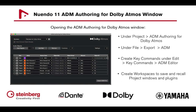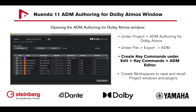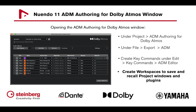Let's take a look at the ADM Authoring for Dolby Atmos window. It can be opened under Project > ADM Authoring for Dolby Atmos, or under File > Export > ADM. You can also create key commands under Edit > Key Commands > ADM Editor, or create workspaces to save and recall different project window configurations, including plugins.